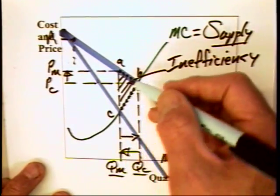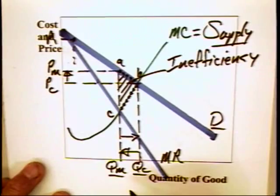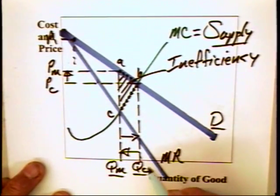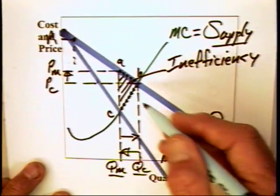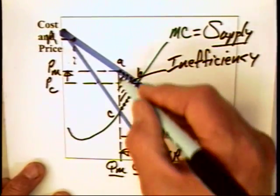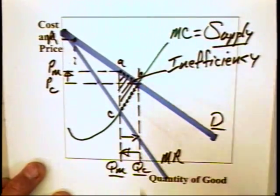If the monopolist is prosecuted by the antitrust authorities and forced to produce at QC. And it could very well be that the cost of antitrust enforcement or cost of regulating this monopoly could easily be greater than this triangular area, ABC, which means that the monopolist should be left alone.